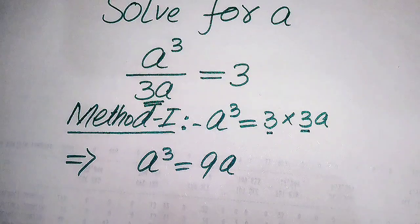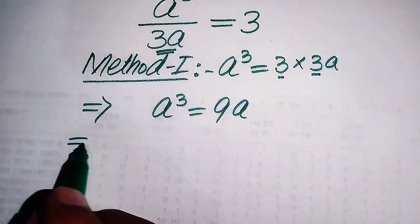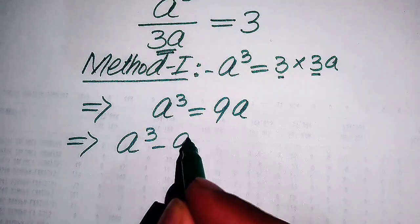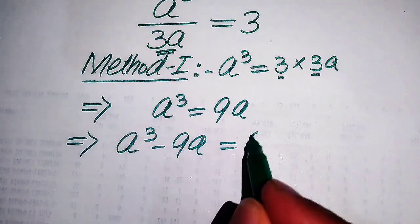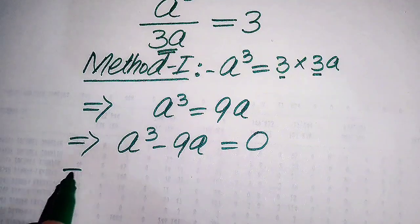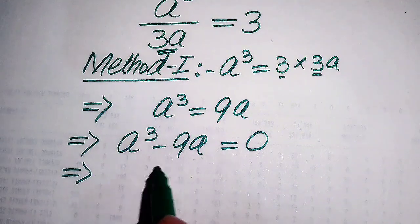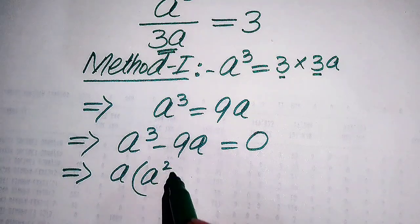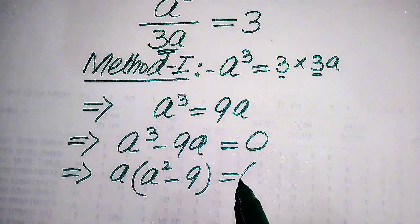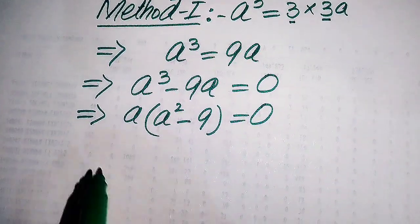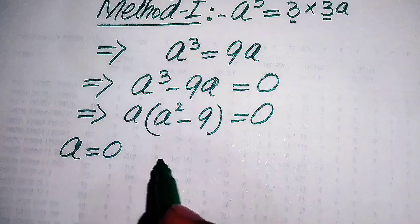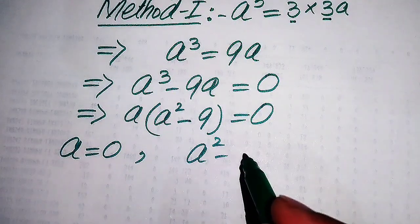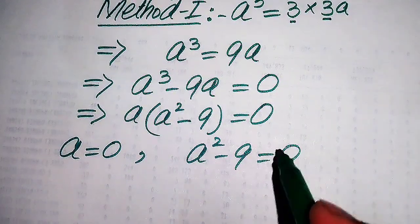Now we move 9a from the right hand side to the left hand side, giving us a cubed minus 9a equals zero. Both terms involve a, so we take a as a common factor and get a times (a squared minus 9) equals zero. We split this into two cases: the first case is a equals zero, and the second case is a squared minus 9 equals zero.